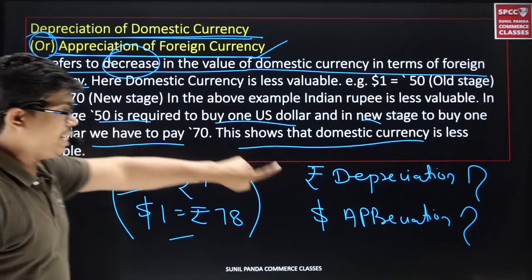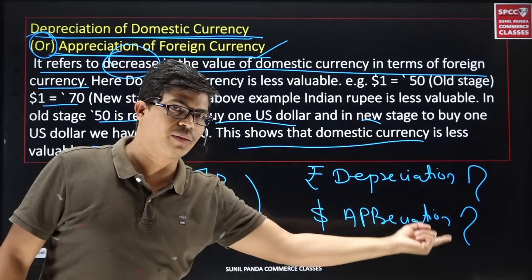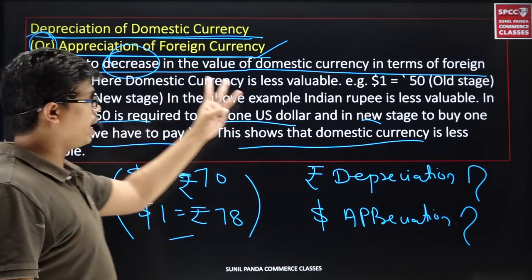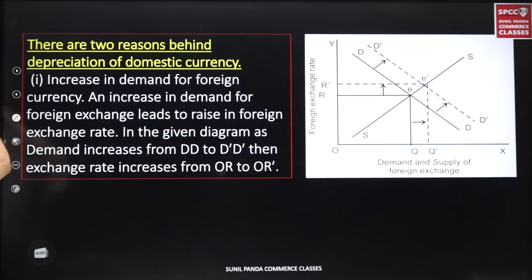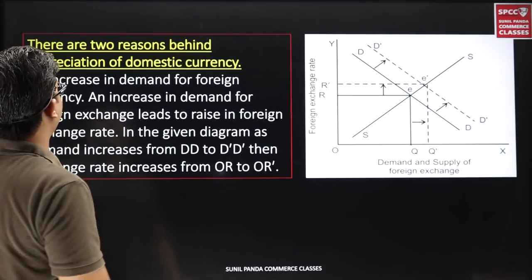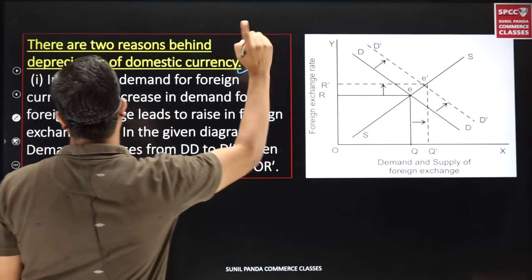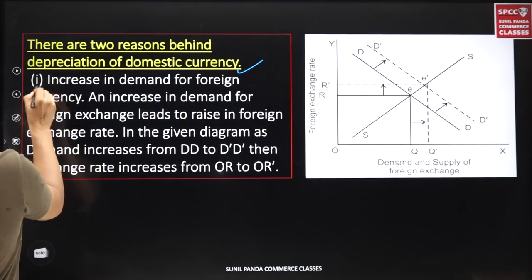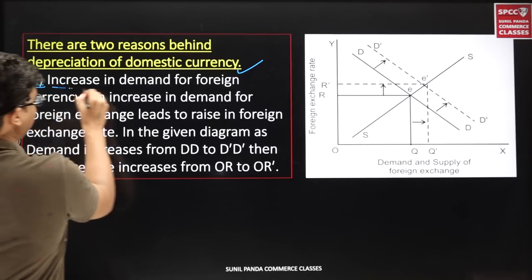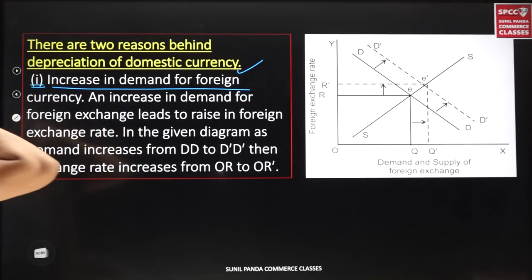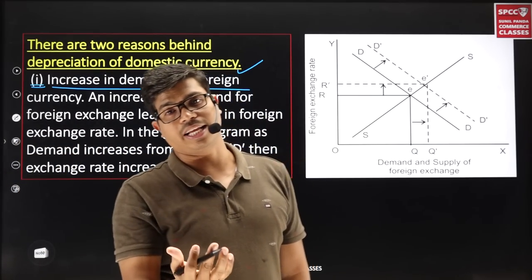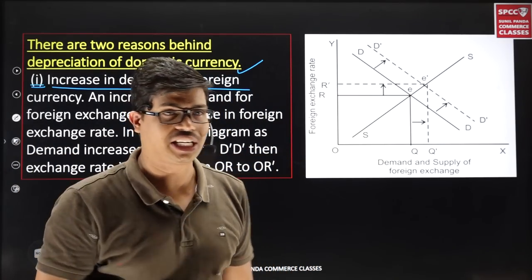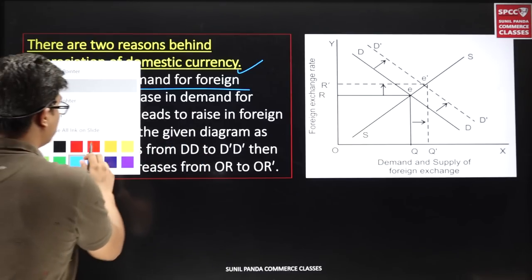So to summarize: the first context was the meaning, the second was the effect on export and import. Now the third context is the reason. Why does depreciation happen? There are two reasons behind depreciation of domestic currency.